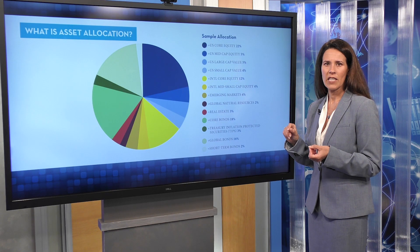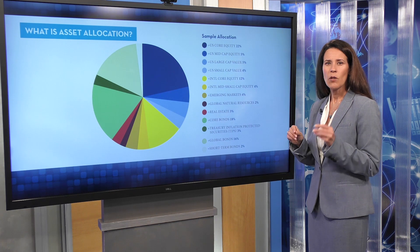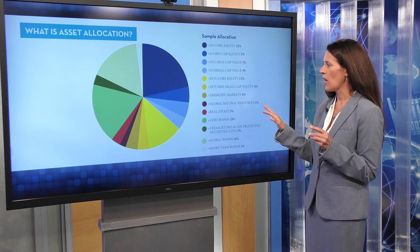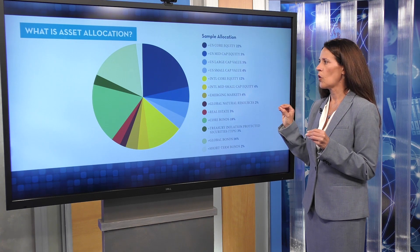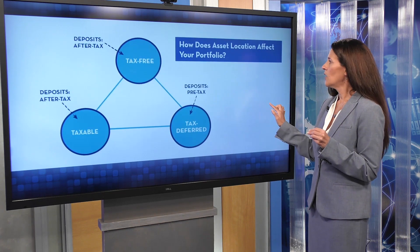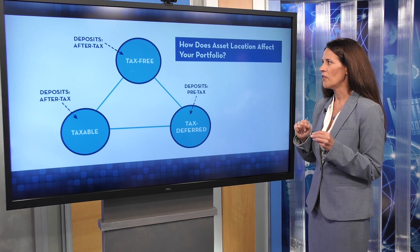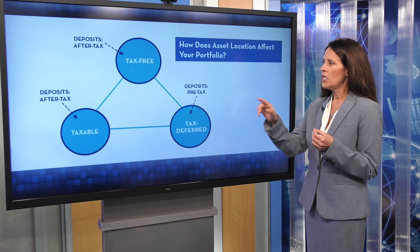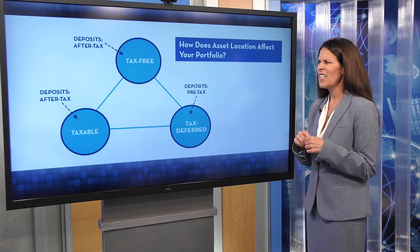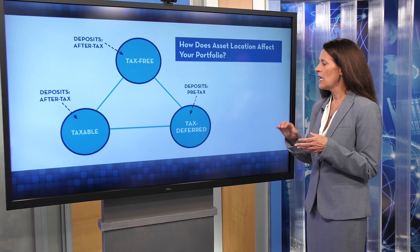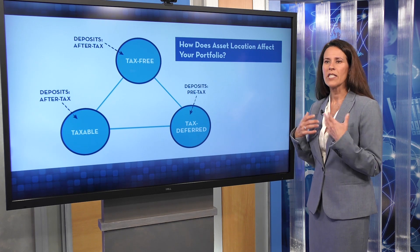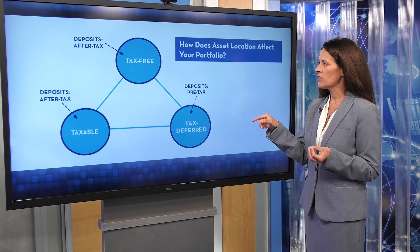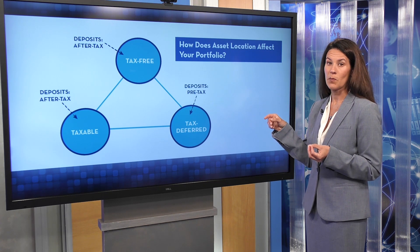Something that often gets overlooked is asset location. That's taking a look at the different asset classes you have and making sure that you're holding them in the right accounts. There are three different types of investment accounts: tax-free, which includes things like your Roth IRA; your taxable pool, which is anything not in retirement accounts; and then the tax-deferred, which is traditional IRAs, 401ks, TSP, etc. Each of these types of accounts are treated differently from a tax perspective.